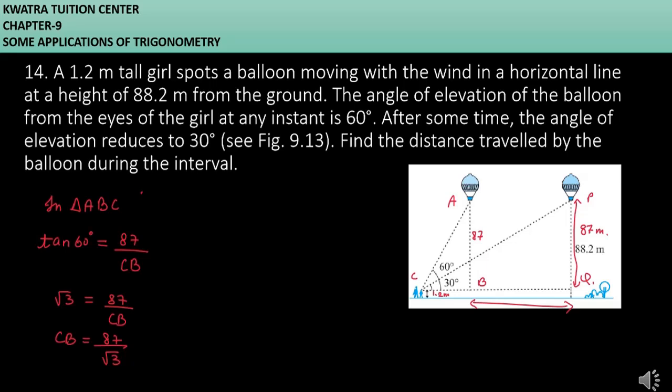Now let's find BQ. We will take triangle PCB. The angle is 30 degrees and perpendicular is 87. Base is CB plus BQ, which is 87 under root 3 plus BQ.